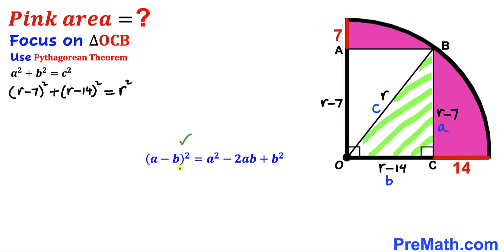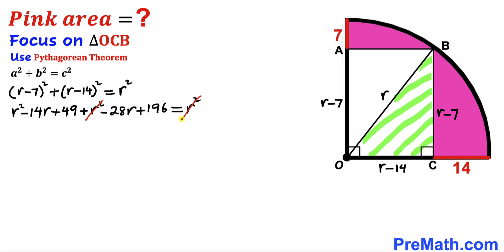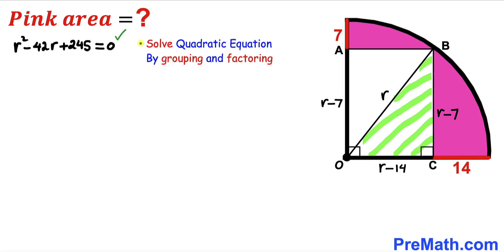So filling in the Pythagorean formula: (r − 7)² + (r − 14)² = r². Let's recall the identity (a − b)² = a² − 2ab + b² and apply it to both binomials on the left-hand side. This gives us r² − 14r + 49 + r² − 28r + 196 = r². The r² cancels out, and combining like terms gives us r² − 42r + 245 = 0.